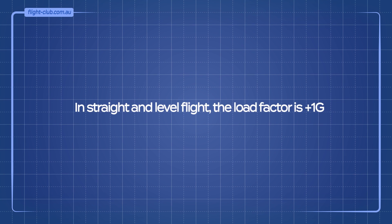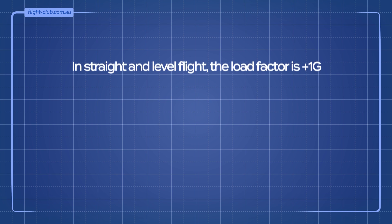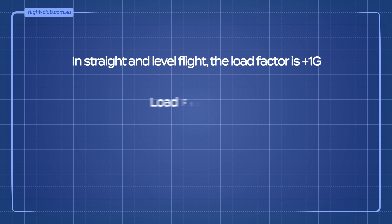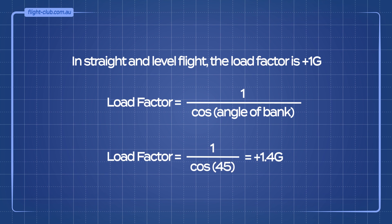In straight and level flight, the load factor is positive 1g. The load factor can be calculated by using this formula. For example, at 45 degree angle of bank turn, the load factor is a positive 1.4g.